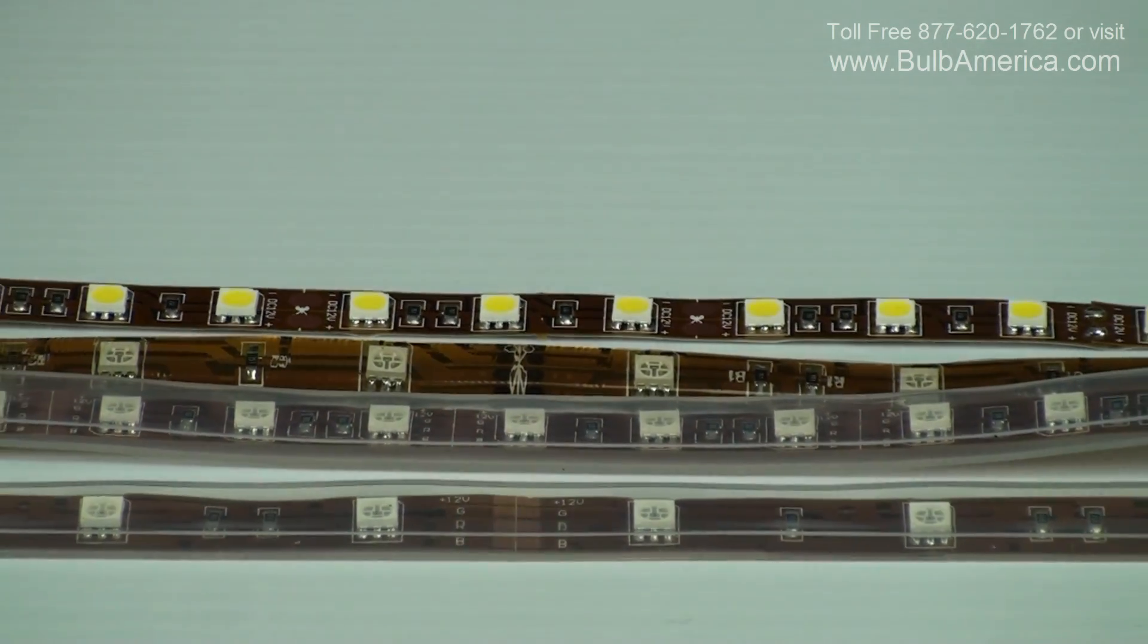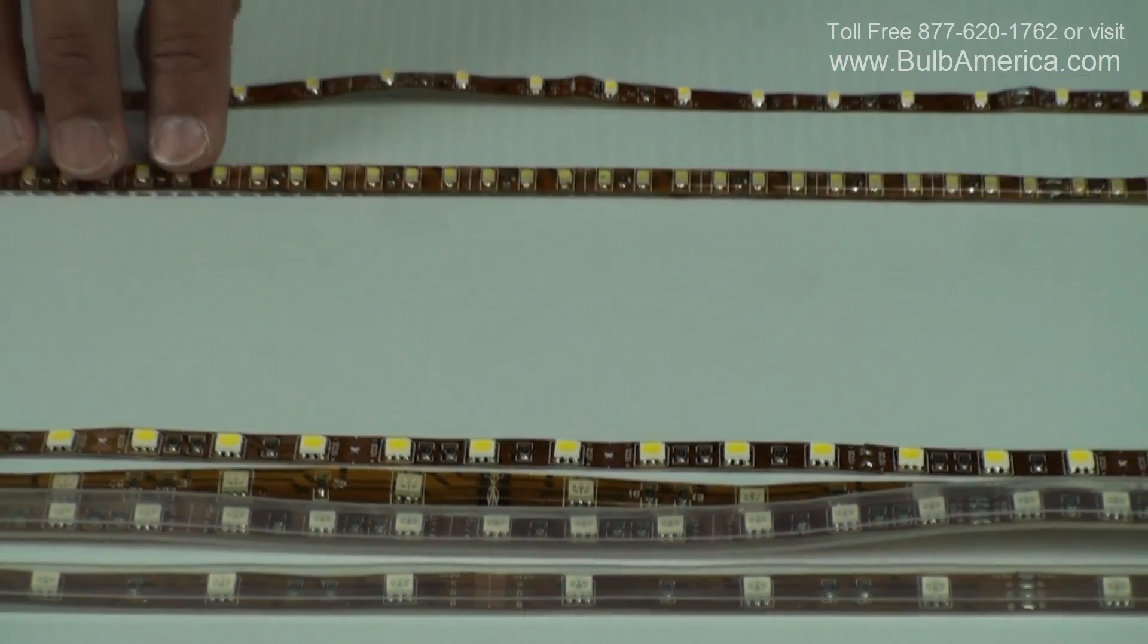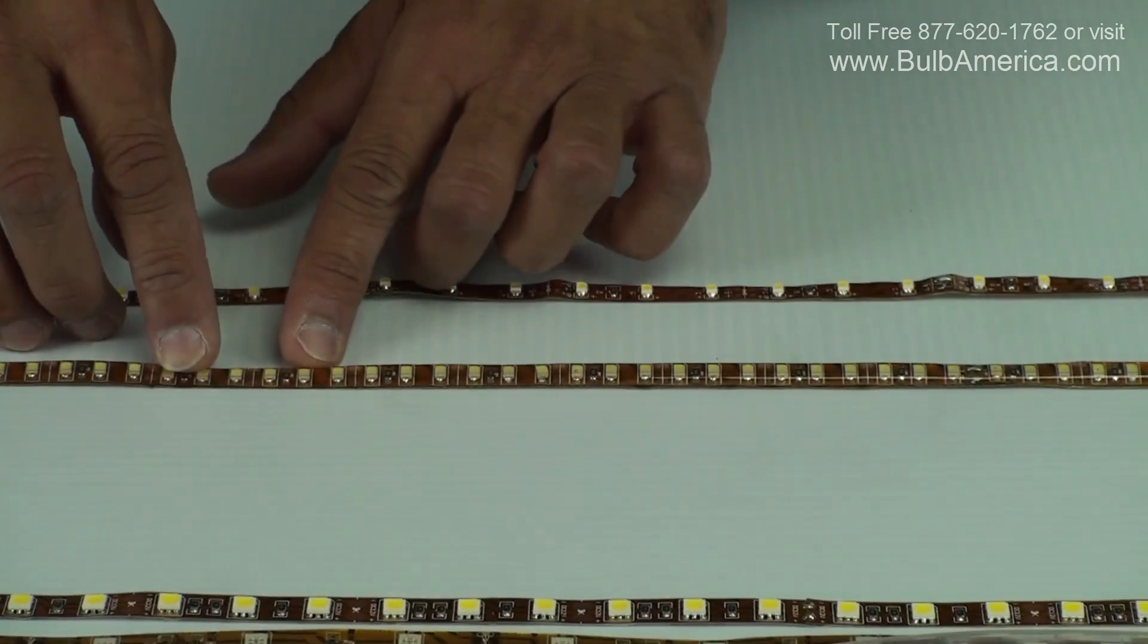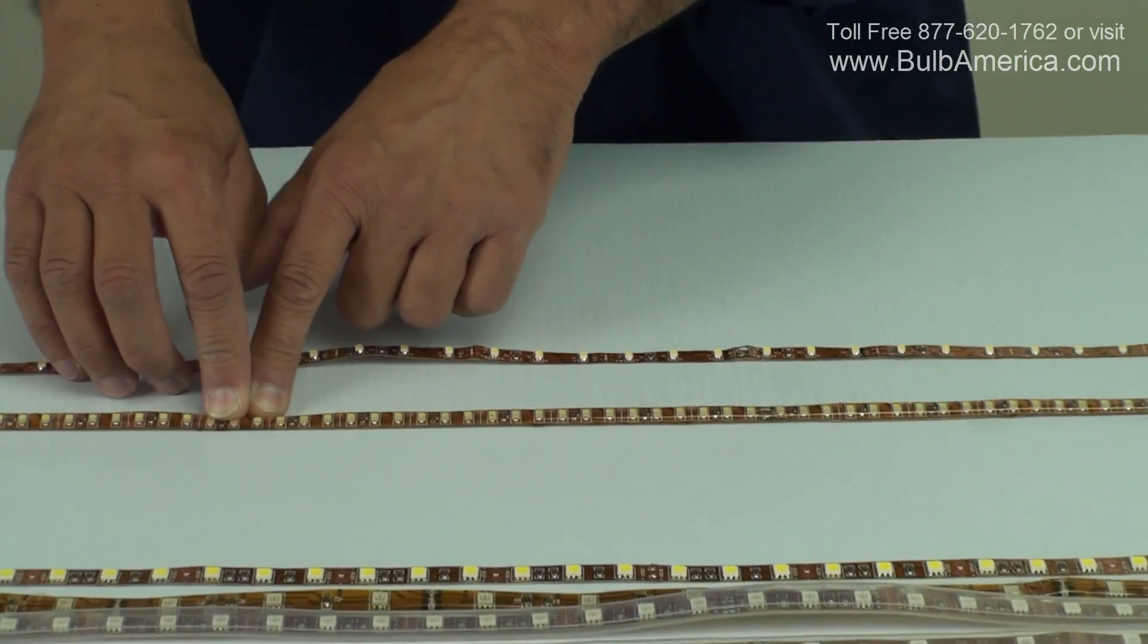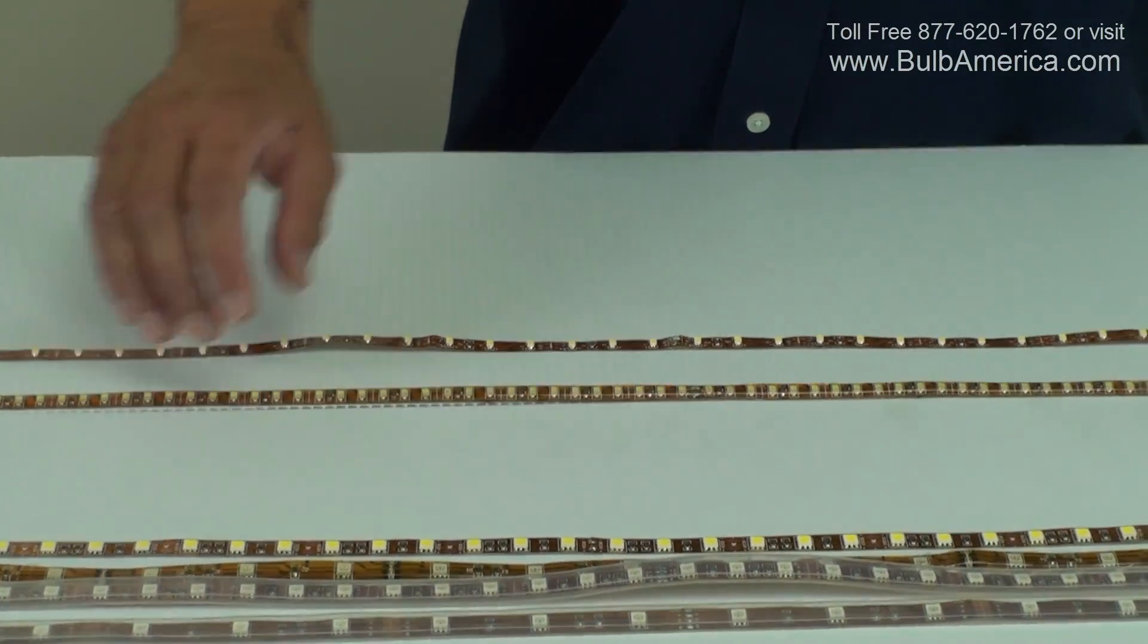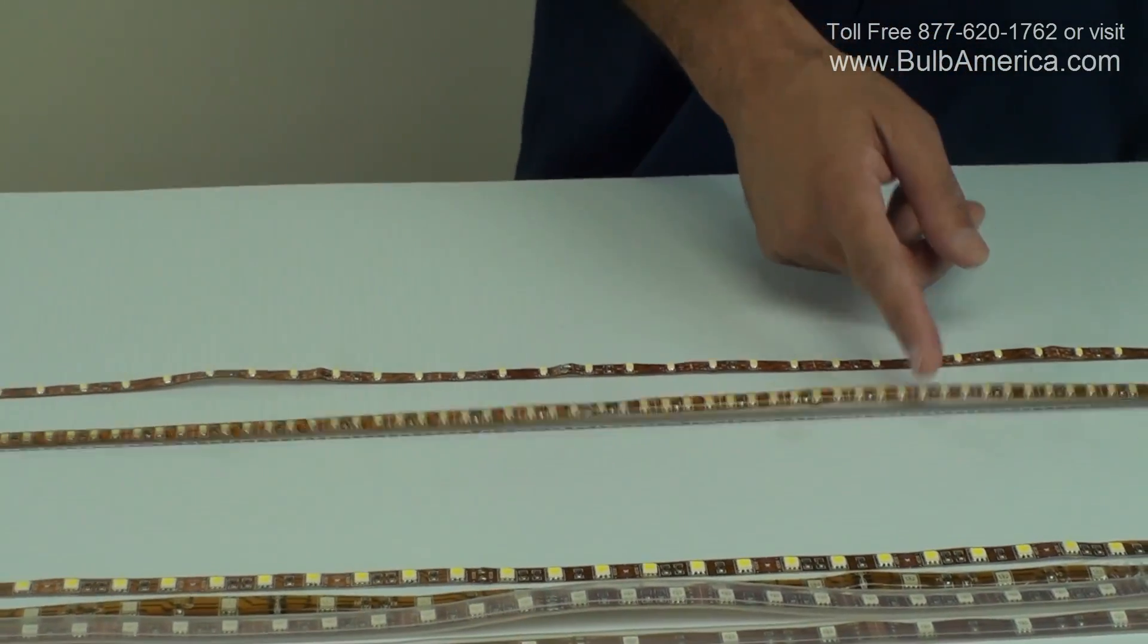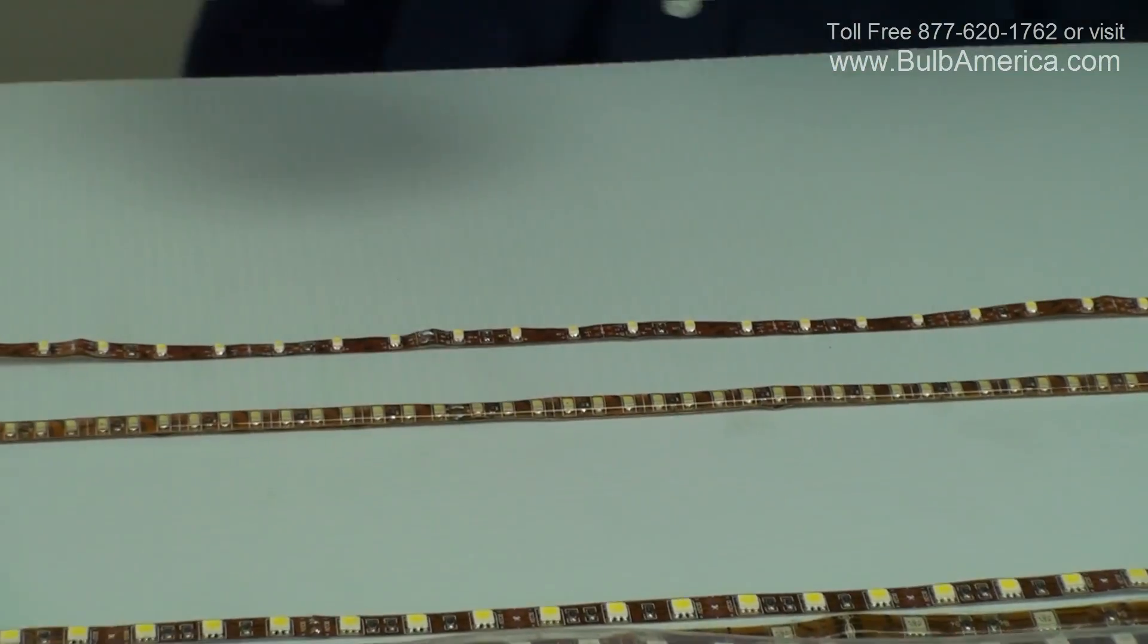In the 3528, you have the same issue. This one is 120 LEDs per meter, that's the maximum number of LEDs you'll be able to get per meter in the 3528, and this one is a 60. So as you can see, there is more LEDs in the same span, but that's the main difference.